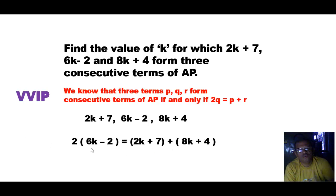So we get 2 into Q. Q is 6k minus 2, equals P plus R. So P is 2k plus 7, and R is 8k plus 4. Now we will solve this equation.